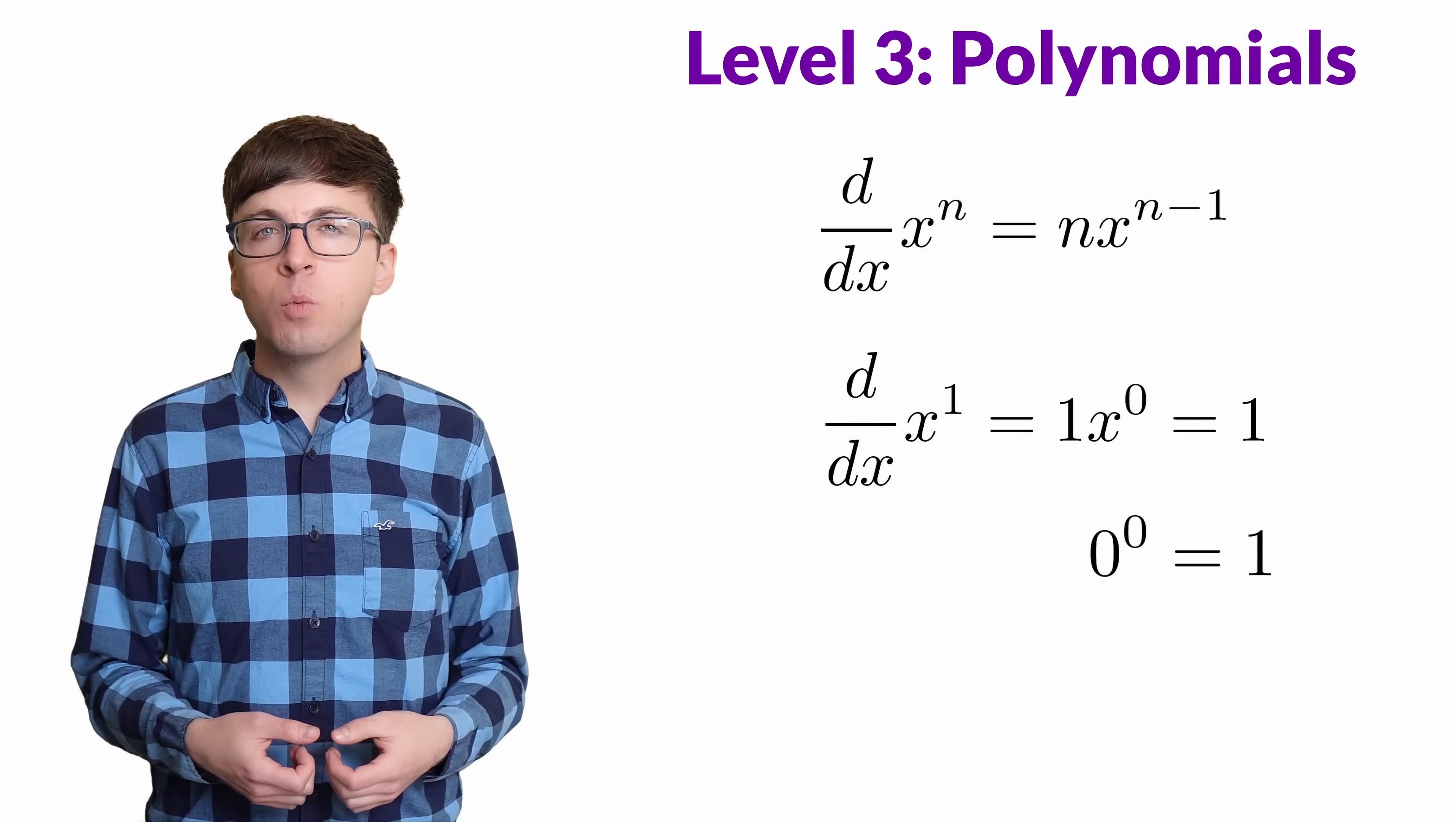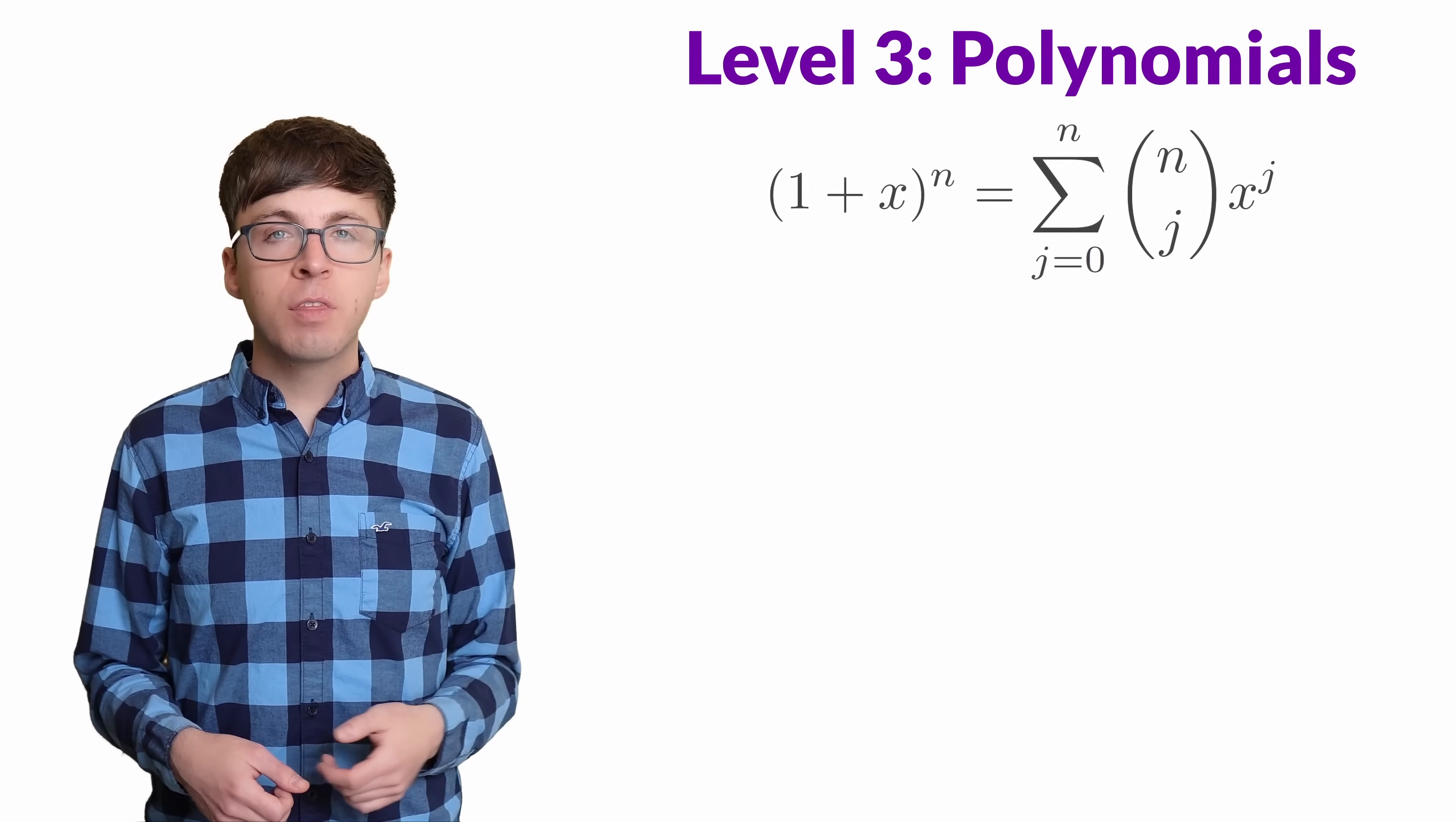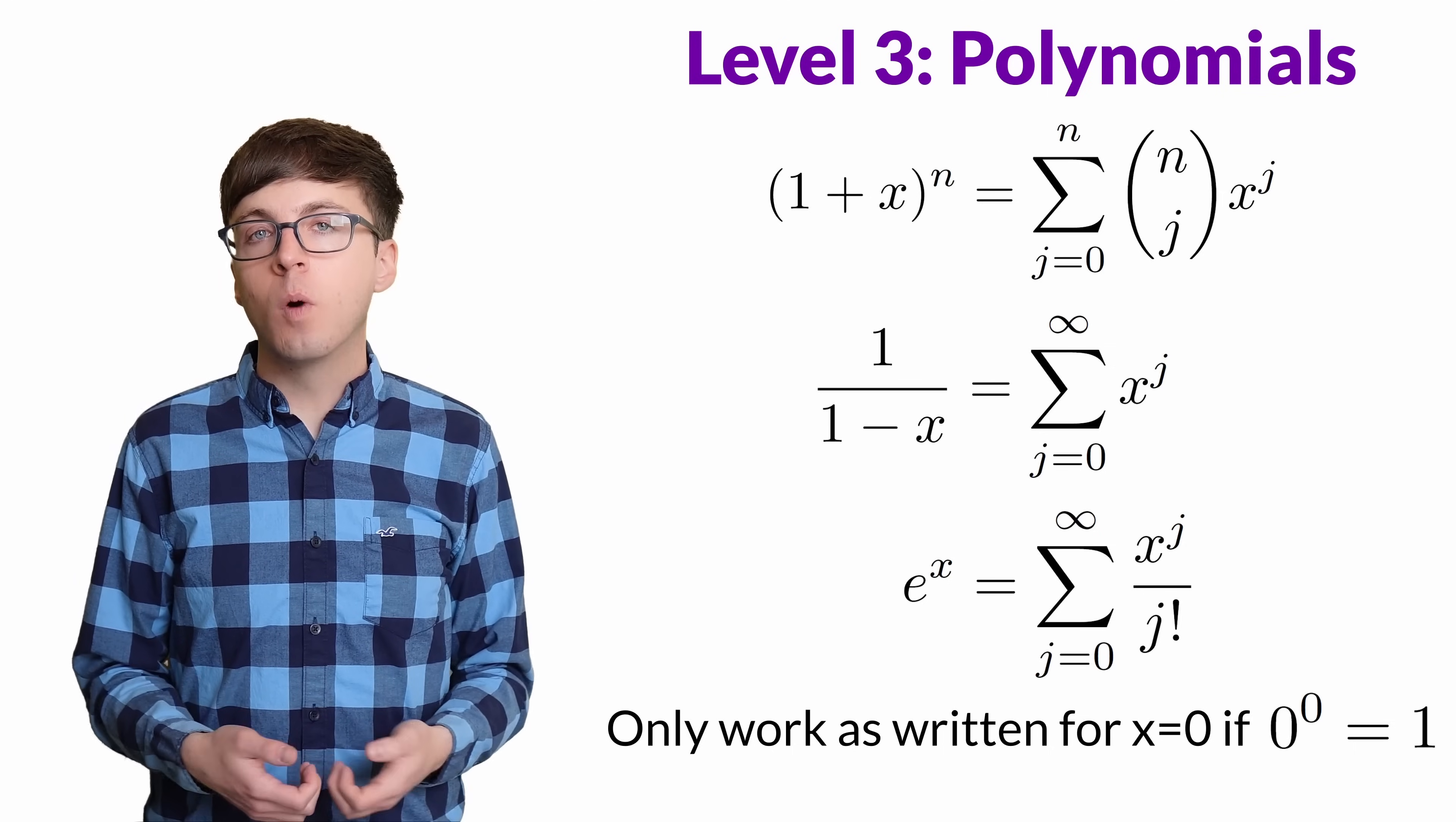Otherwise, the power rule would work for all values of n and x, except for n equals 1 and x equals 0. It's just more convenient to define 0 to the 0 equals 1. And there are other formulas like this. The binomial theorem, the geometric series formula, and this Taylor series expansion of e to the x. All of these formulas only work when x equals 0, if we define 0 to the 0 to be 1.